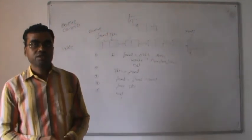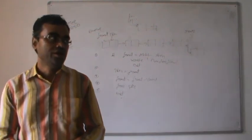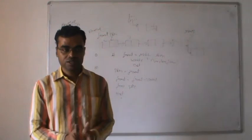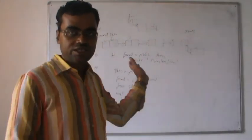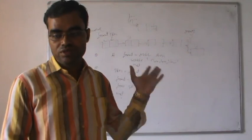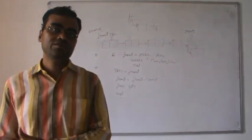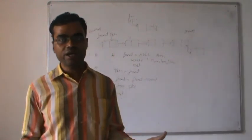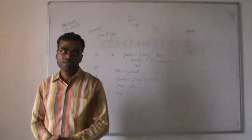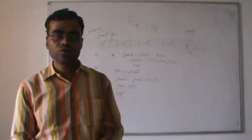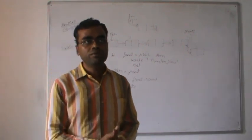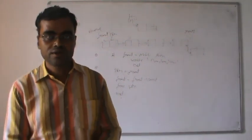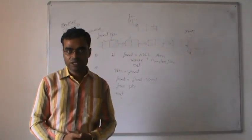There are some more variations of the queue. One is the DQ, that is the double-ended queue, in which we can perform insertion and deletion operations from both sides. Another variation is the priority queue, in which every element is assigned a priority and queue elements are deleted based on their priority values. With this, we complete our lecture. Thank you.